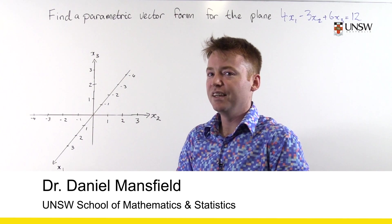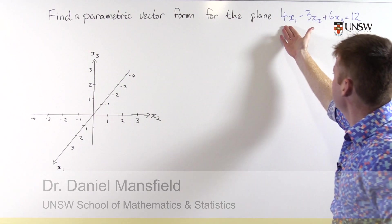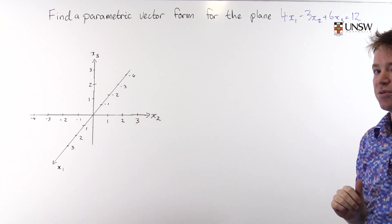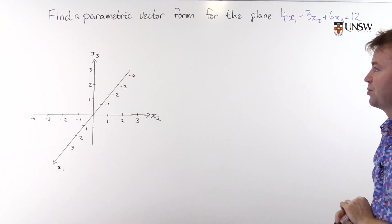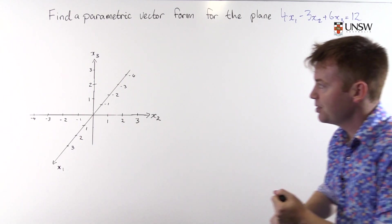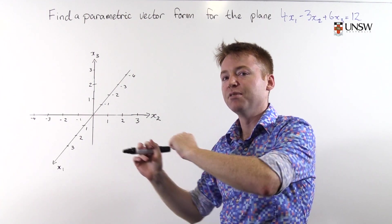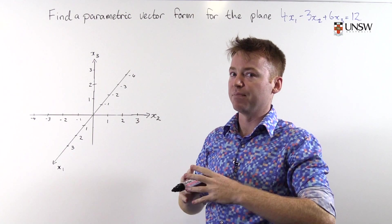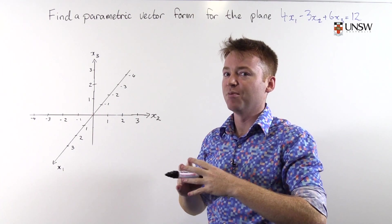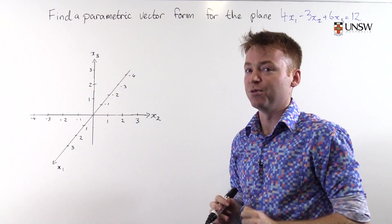Hello and welcome. In this question we will find a parametric vector form for the plane 4x₁ - 3x₂ + 6x₃ = 12. Notice we say find a parametric vector form of the plane. In fact there are many equivalent parametric vector forms for the same plane. So we're going to find one of them and this may look different to the one that you find.